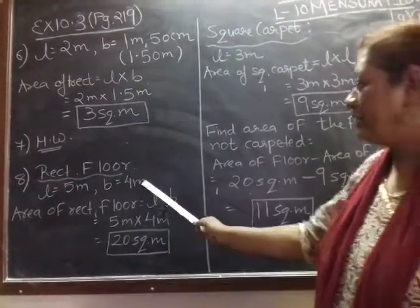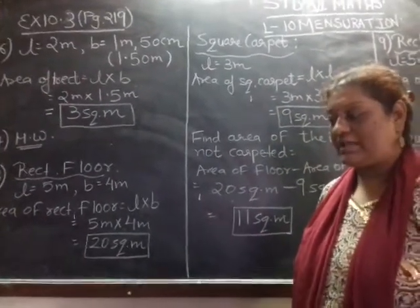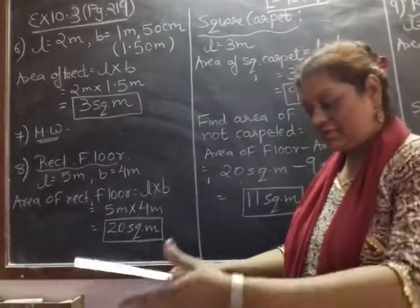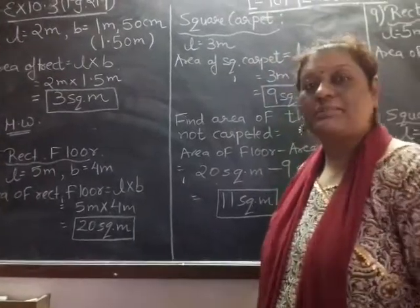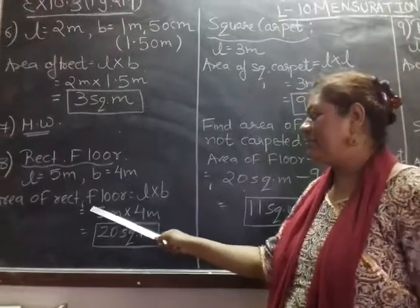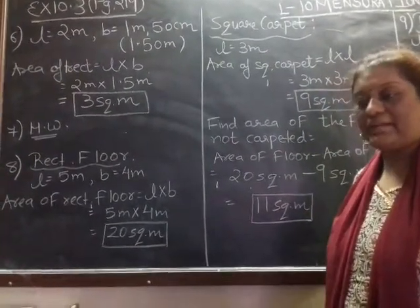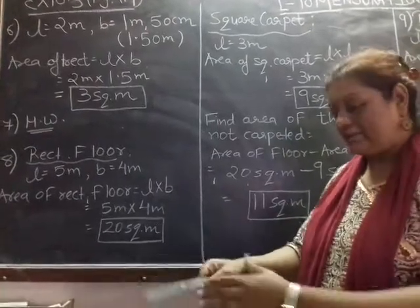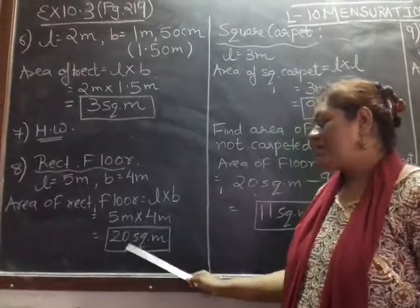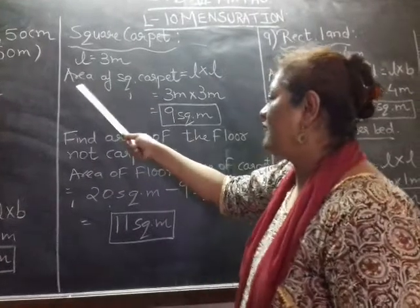We have a rectangular floor and we spread a carpet on the floor — it is not on the boundaries, it is inside the rectangular floor. It covers the whole area where it is spread. First we will find the area of the rectangle. The formula L into B is applicable. Area of rectangular floor is 20 square meters.